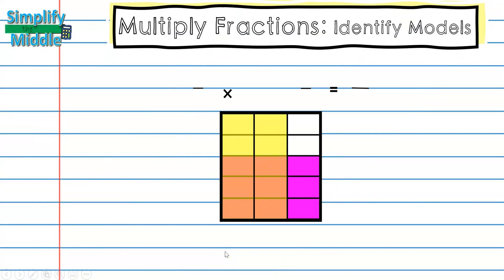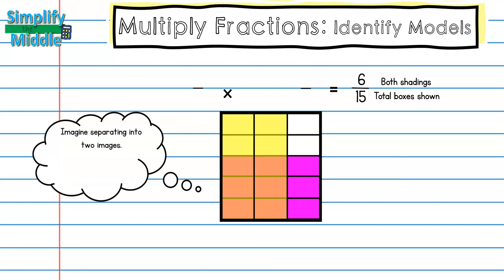On this example I'm going to always, of course, start with my product. So I can see that I have six boxes that have two shadings. Remember, we're looking for something with two shadings for going up and down here and across, that's going to tell me my total boxes shown. So going up and down I have five sections, and going across I have three. Five times three is 15.